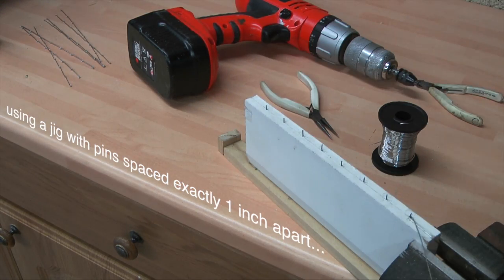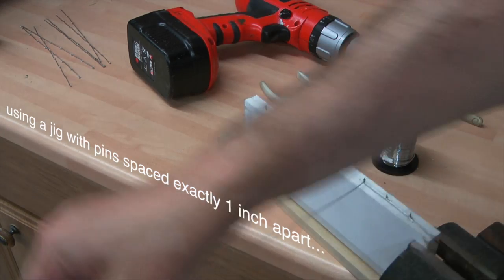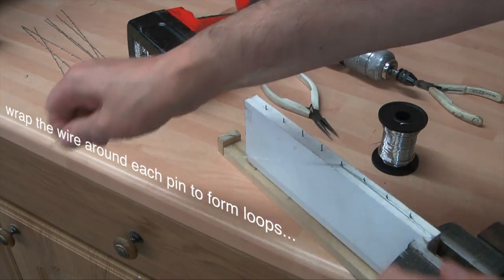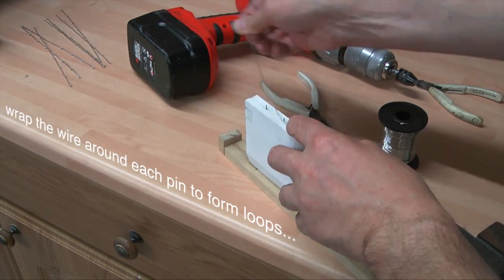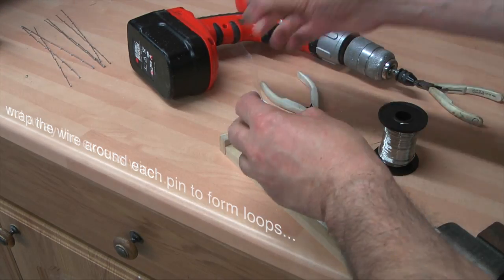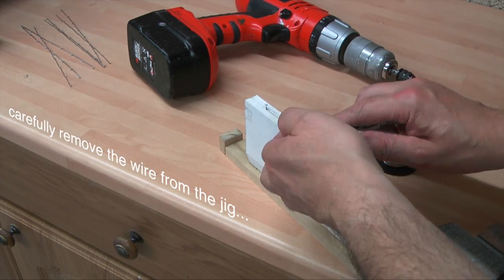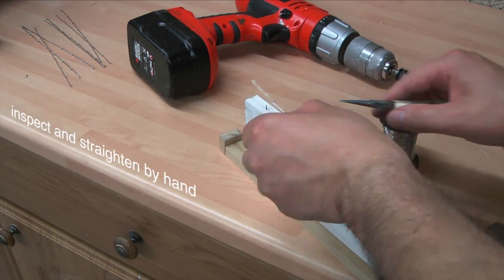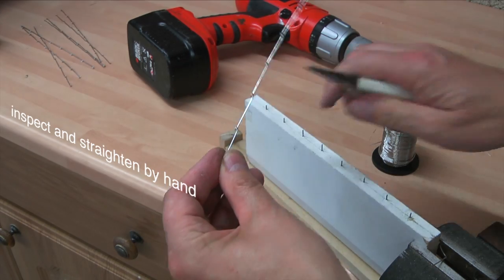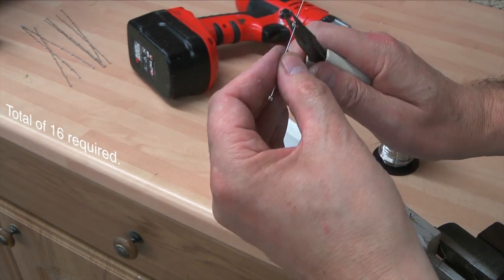Using a piece of MDF skirting board with pins placed one inch apart, the wire is then kept taut while it's wrapped around each of the pins to form loops. The excess wire is then cut off and the newly formed anode link wire is carefully removed from the jig. The wire will actually be slightly curved and therefore need straightening with a pair of pliers. And 16 of these are required for this cube.